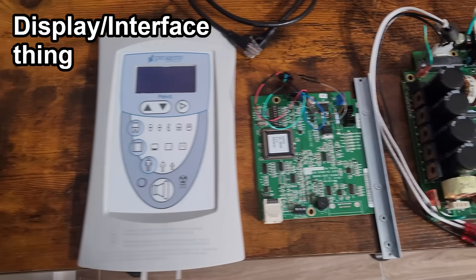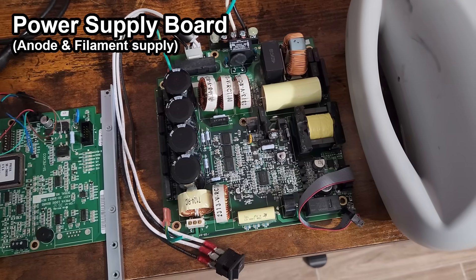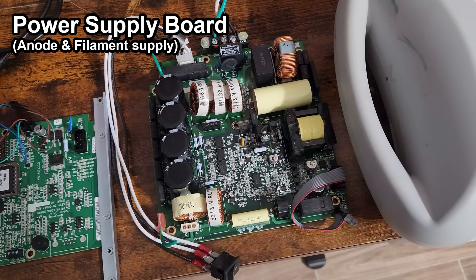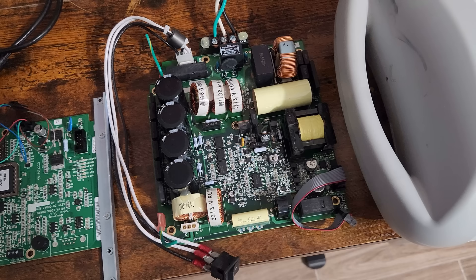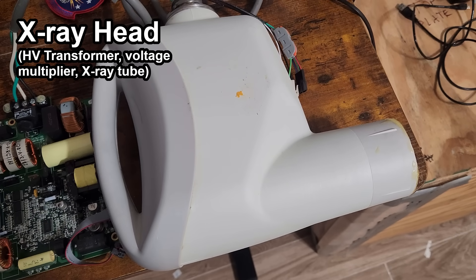We've got a display head interface type thing for the operator, a logic board with some software on it, and a power supply board for the x-ray head itself. So I guess this is the H-bridge that drives the high voltage transformer and also the supply for the tube filament. And finally here's the head itself, which contains the high voltage transformer, x-ray tube, shielding, and filters.